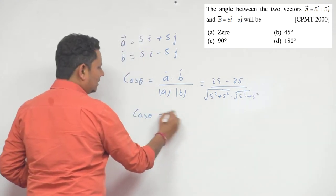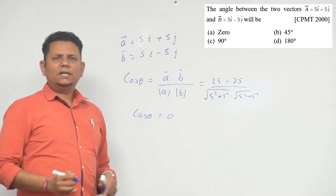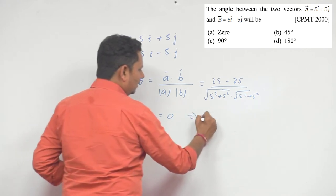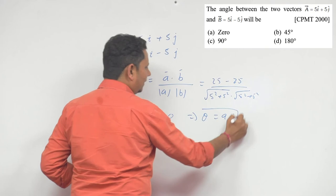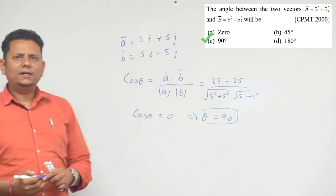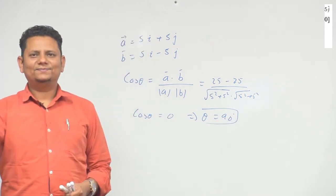And your cos theta value is 0. Once cos theta is 0, this implies theta = 90 degrees. So theta = 90 degrees, option C is the correct answer.